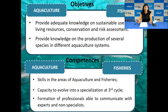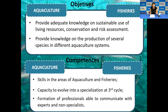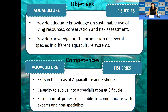As I mentioned before, we have these two main areas. Our main objectives are to provide adequate knowledge on sustainable use of living resources, conservation and risk assessment, as well as to provide knowledge on the production of several species in different aquaculture systems. We want to give students competences in these two areas, and also the capacity to pursue third cycle studies and to develop professionals able to communicate with experts and with society.